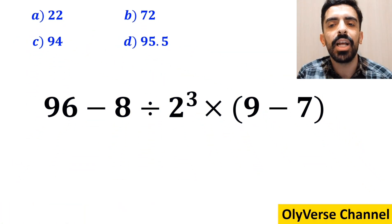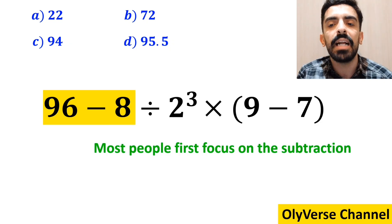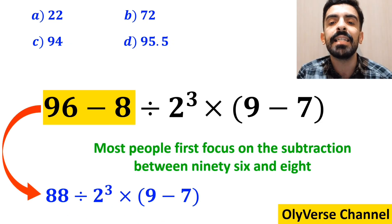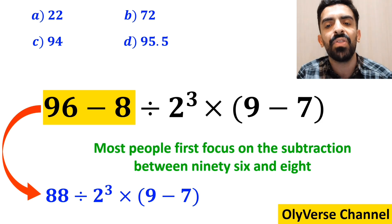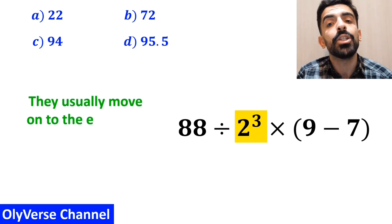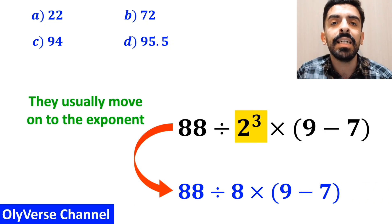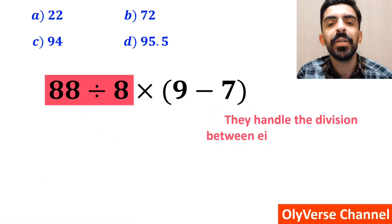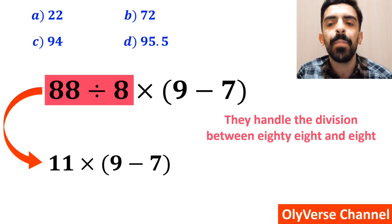To solve this question, most people first focus on the subtraction between 96 and 8 and they rewrite the whole expression as 88 divided by 2 to the power of 3 multiplied by 9 minus 7 inside the parenthesis. In the next step, they usually move on to the exponent and rewrite this expression as 88 divided by 8 multiplied by 9 minus 7 inside the parenthesis. Then they handle the division between 88 and 8 and replace this expression with 11 multiplied by 9 minus 7 inside the parenthesis.